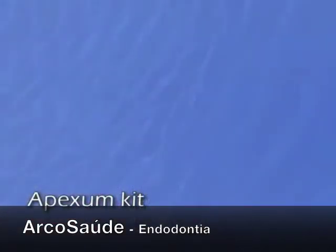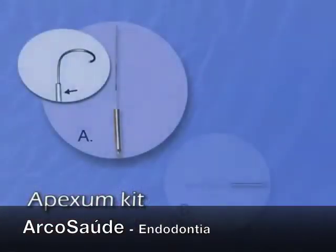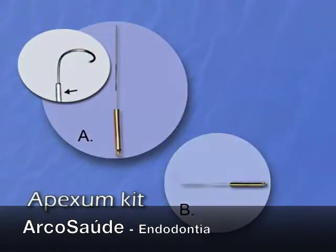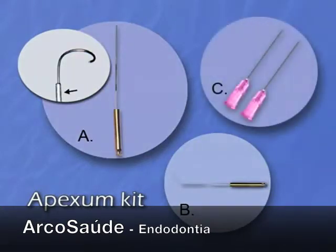The Apexin kit includes two ablators — the Apexin coarse and the Apexin fine — and two irrigation needles.